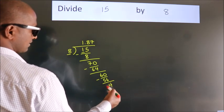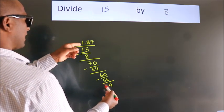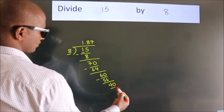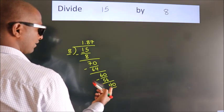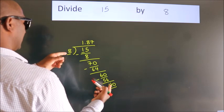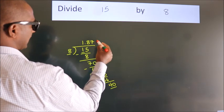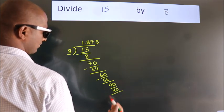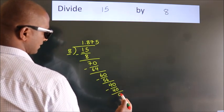After this, we already have the decimal, so directly take 0. So 40. When do we get 40 in the 8 table? 8 times 5 is 40. Now we subtract. We get 0.